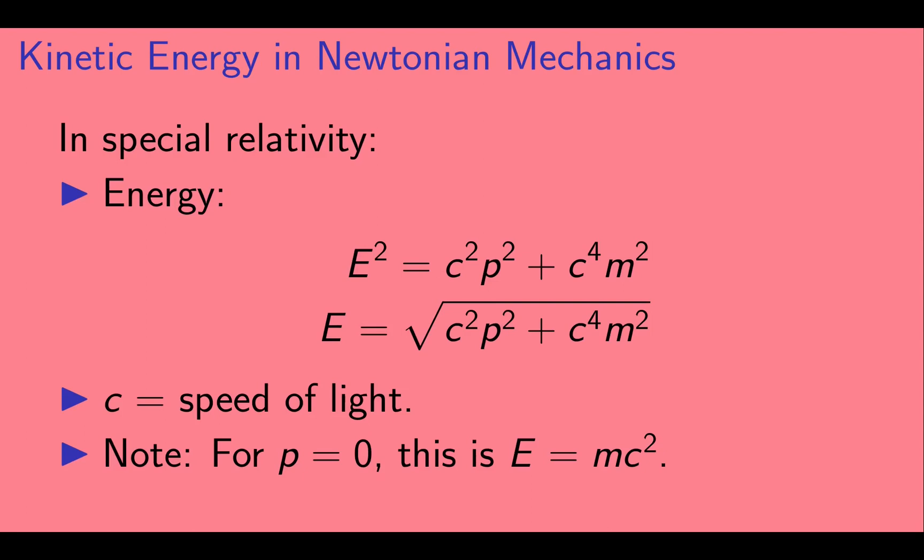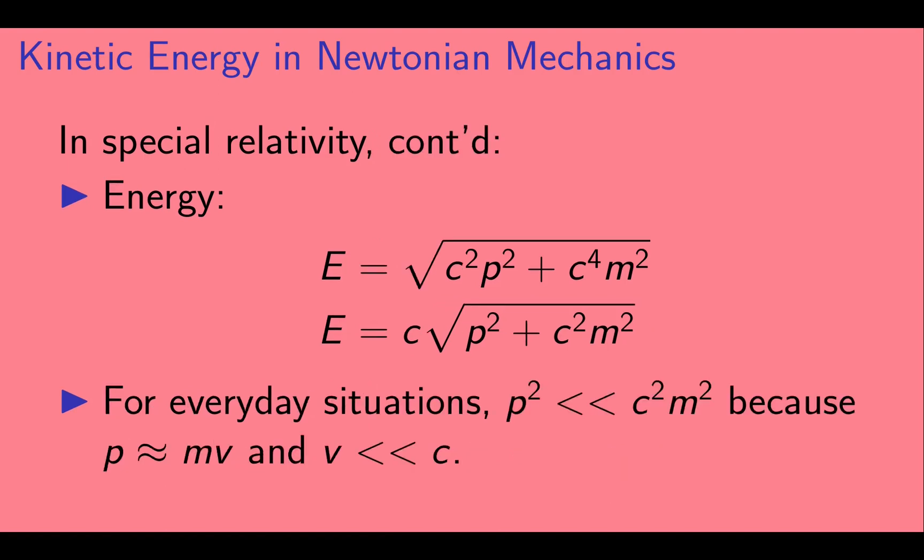In special relativity, the energy of an object squared equals c²p² + c⁴m². Here, c is the speed of light. We can take the square root of both sides to get an expression for the energy. Note that for the case where momentum p is zero, this gives E = mc², which is a relation you've probably heard before. We can pull a factor of c out front, leaving p² + c²m² under the square root sign. For everyday situations, the p² term is much smaller than the c²m² term, because p is approximately mv, so p² is approximately m²v², and v is much, much smaller than c.